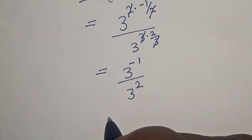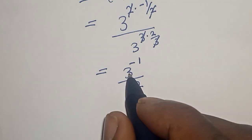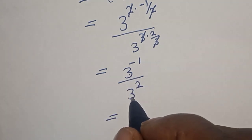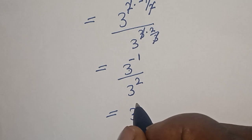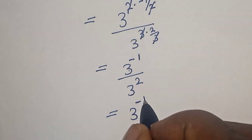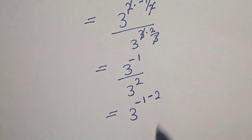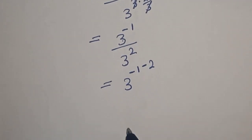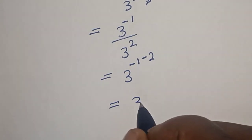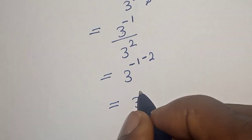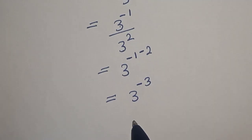Remember they have the same base — base 3 here and base 3 here — so we apply the rule and get 3 to the power of minus 1 minus 2, which equals 3 to the power of minus 3.